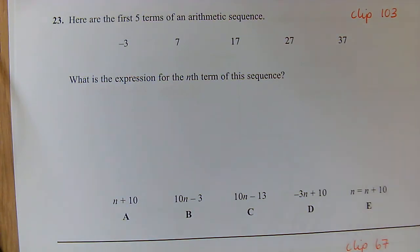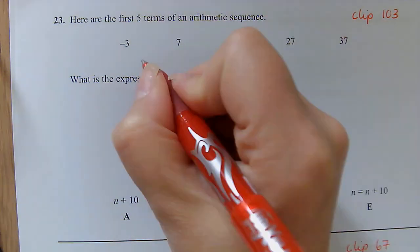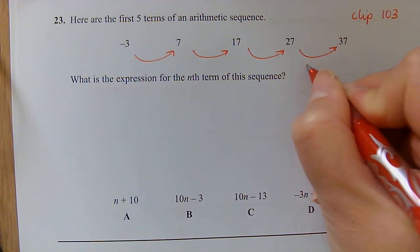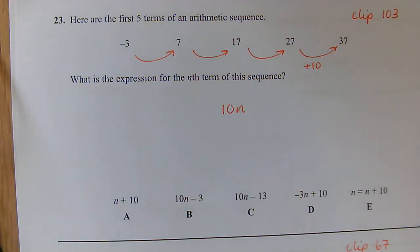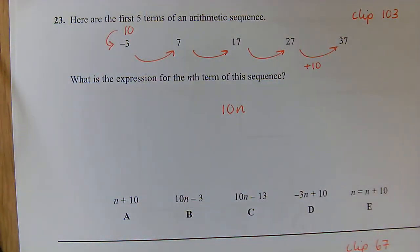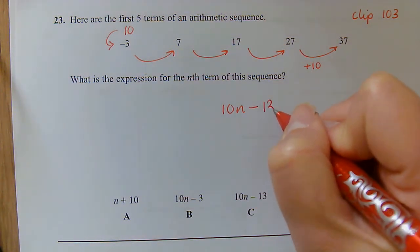Question 23: Got another sequence here, arithmetic sequence, same as a linear sequence, so it just goes up by the same amount each time. We're looking at what is our sequence going up in? We're adding 10 each time, so we're going to start off with 10n. But do I start with the number 10? No. How do I go from 10 to -3? Well, I am subtracting 13.